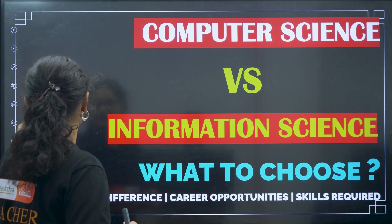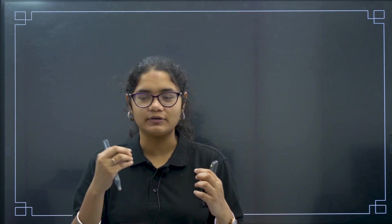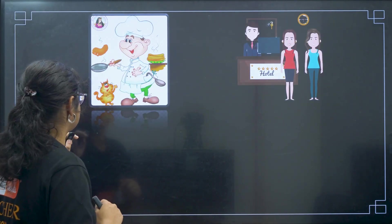Now let's get started. Before starting, I will give you a very real-life example. Let us compare a chef who cooks new dishes using new technologies in cooking, new methodologies, and new ingredients — with a restaurant manager who manages everything so that the restaurant can run successfully. This is how we will understand computer science and information science in detail.